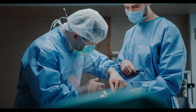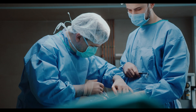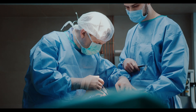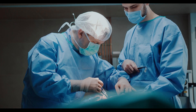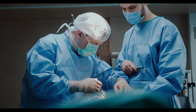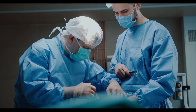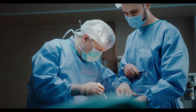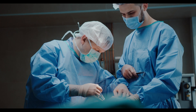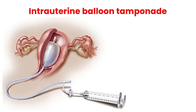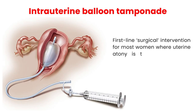If pharmacological measures fail to control the hemorrhage, surgical interventions should be initiated sooner rather than later. Conservative surgical interventions may be attempted as second-line management, depending on clinical circumstances and available expertise. Intrauterine balloon tamponade is an appropriate first-line surgical intervention for most women where uterine atony is the only or main cause of hemorrhage.